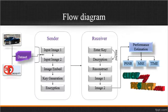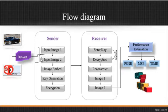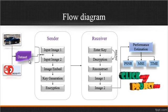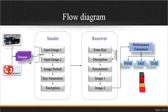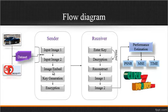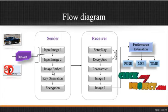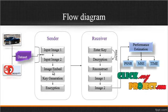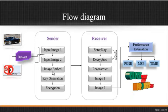Now we are going to discuss about the flow diagram for the process. First, the input image is taken from the dataset. The dataset is a folder which consists of several input images. After getting two input images from the dataset, the image embedding step is carried forward. In this image embedding, we resize the image to an aspect ratio of 300 x 300, then embed the two images to create a single tile image.